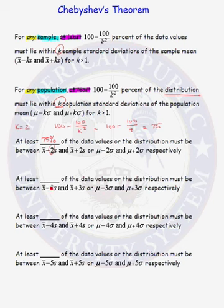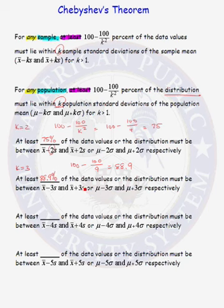At least what percent of the data values or the distribution must lie within three standard deviations of the mean? In this case, k equals 3, so we need to figure out what 100 minus 100 over 9 is. That is 88.9 percent. So at least 88.9 percent of the data values from any sample, or 88.9 percent of all values in a distribution, must lie within three standard deviations of the mean.